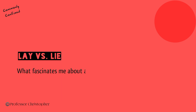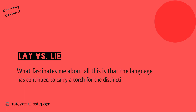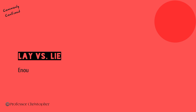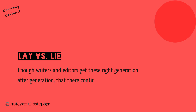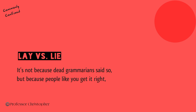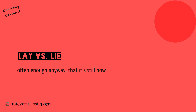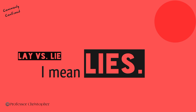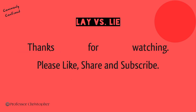What fascinates me about all this is that the language has continued to carry a torch for the distinction for 700 years. Enough writers and editors get these right generation after generation that there continues to be a right and a wrong. It's not because a dead grammarian said so, but because people like you get it right — often enough anyway — that it's still how the land lies.